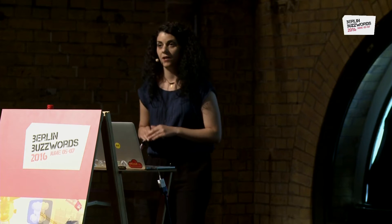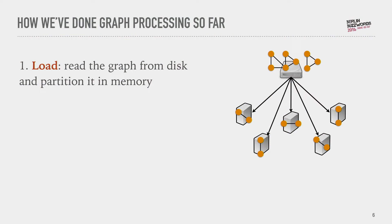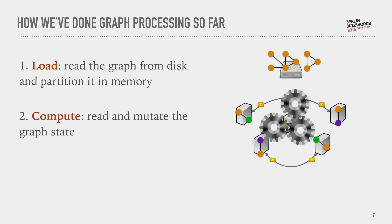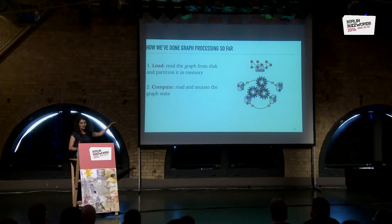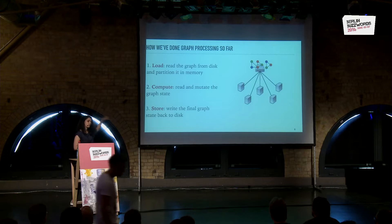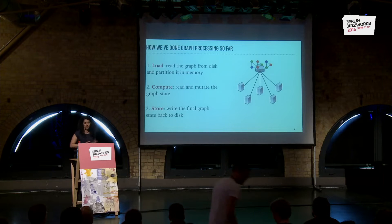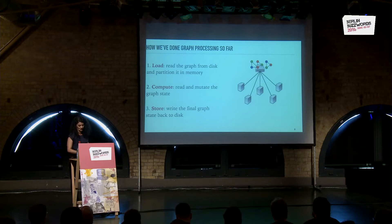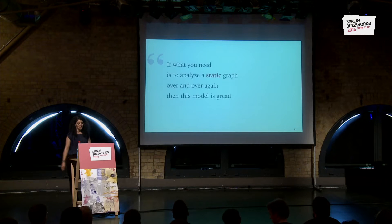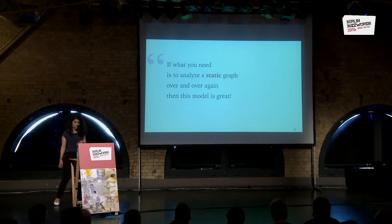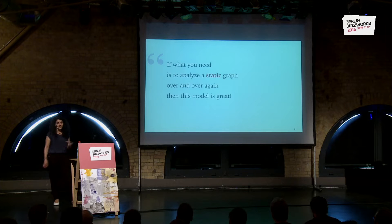So far, we've been doing graph processing in a very specific way. We usually have a graph stored on disk. We bring it into memory, load it into several machines, probably partitioned. Then we do some processing — we compute and change the graph structure or the values of the vertices. After the processing is done, we go back and store it to disk and read the result. This is the way we do graph processing today. Well, if all you need is to analyze a static graph over and over again, this model is great.